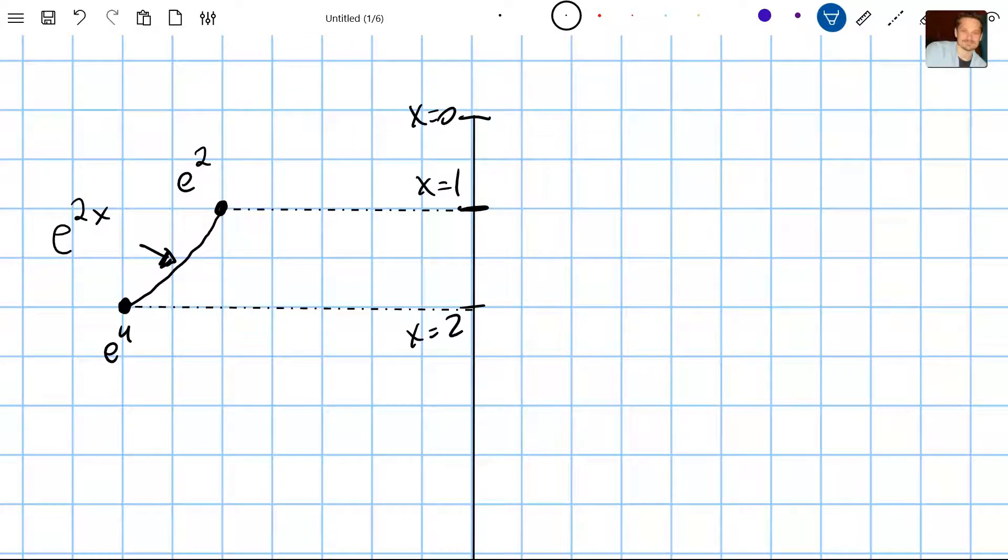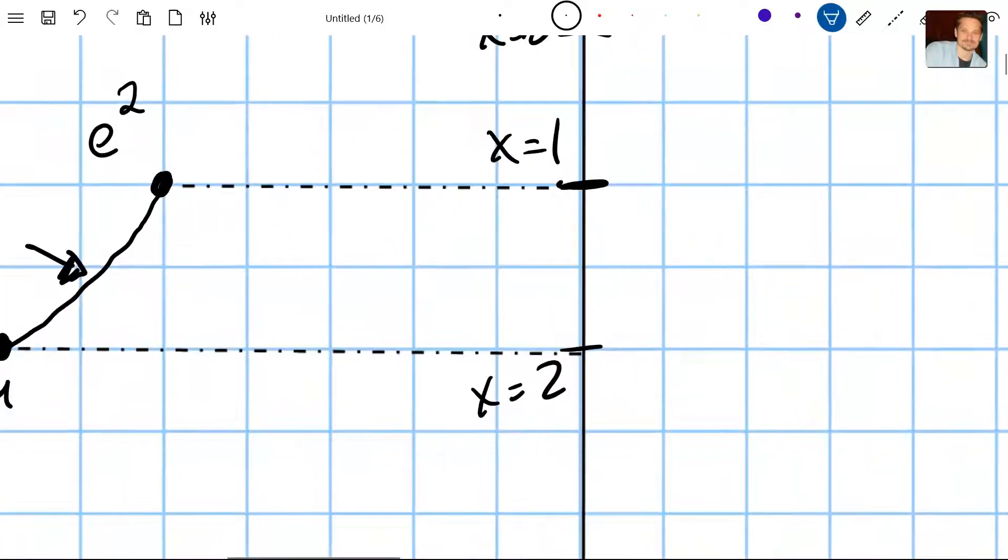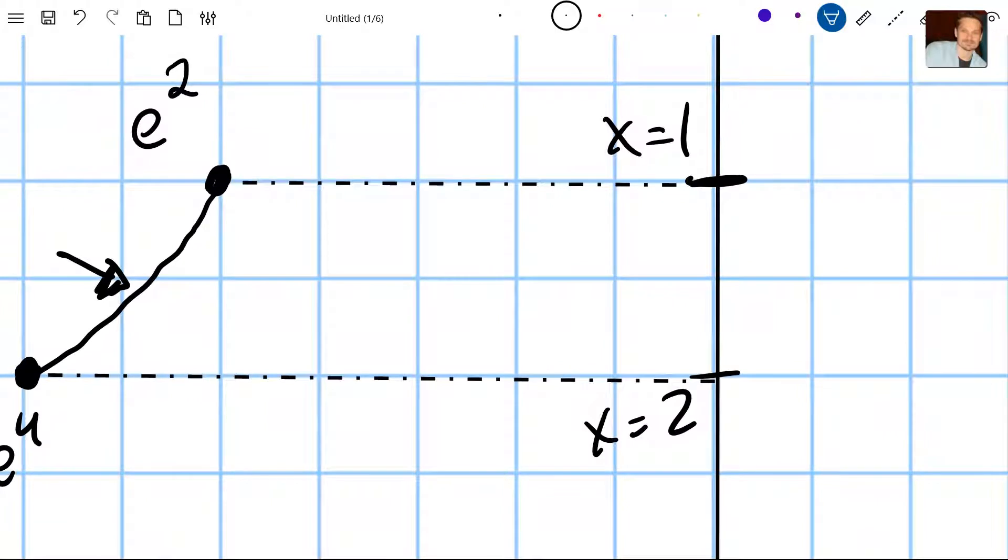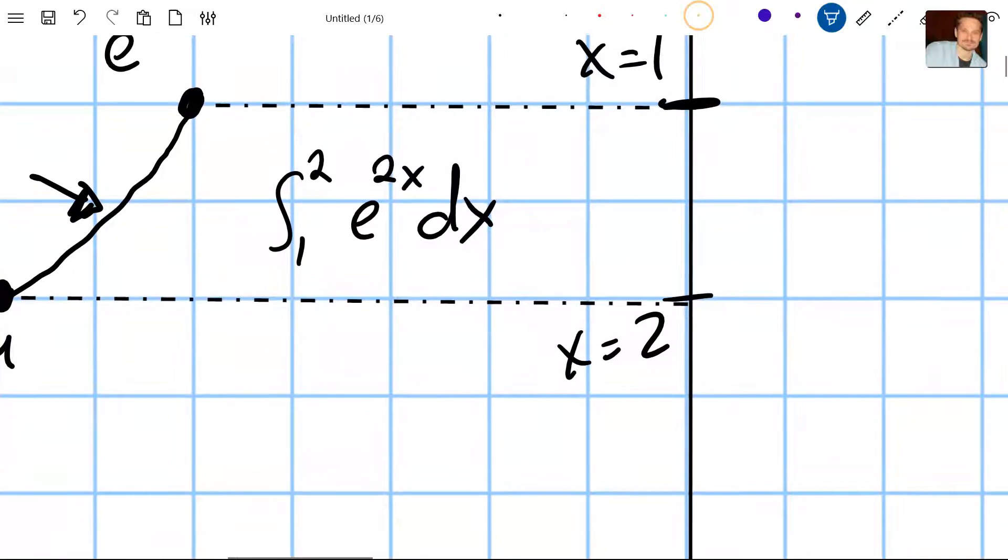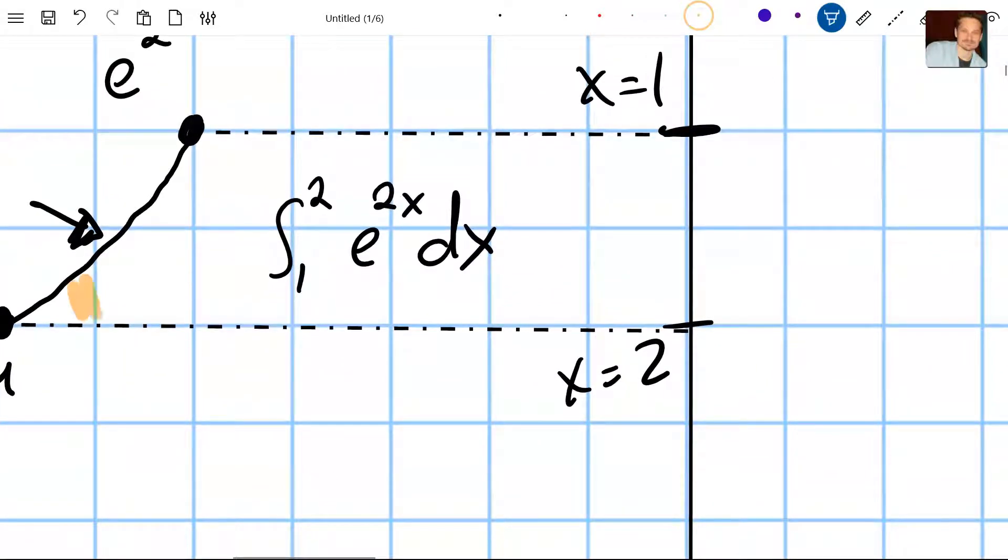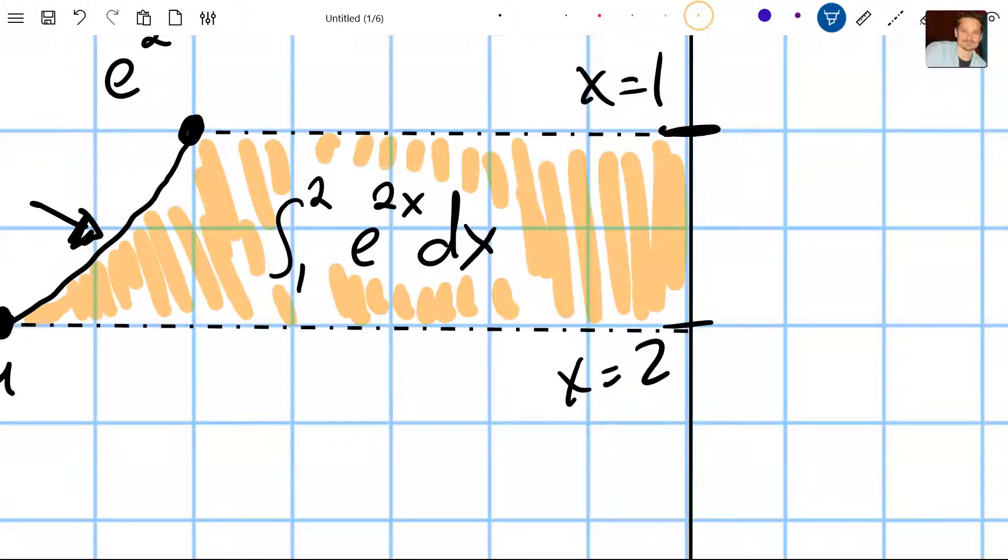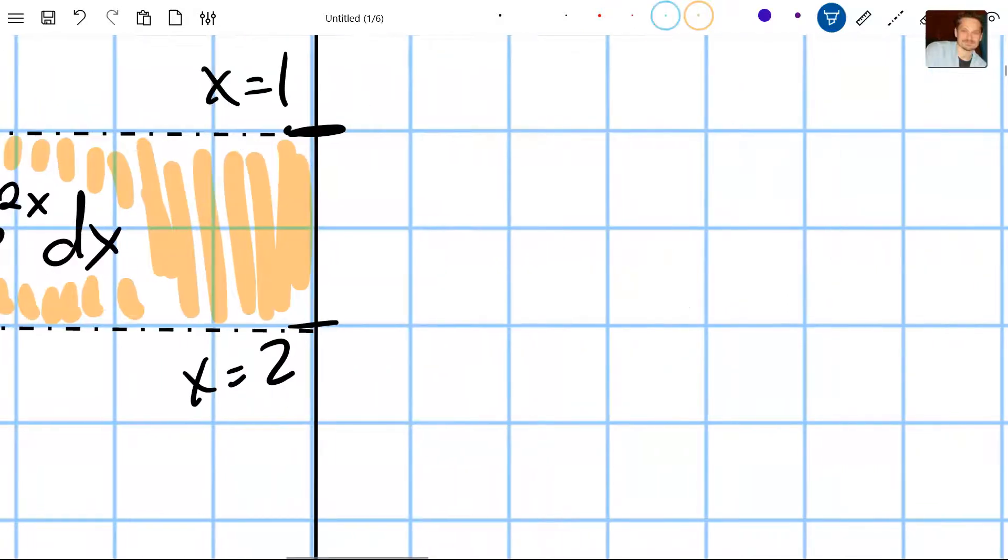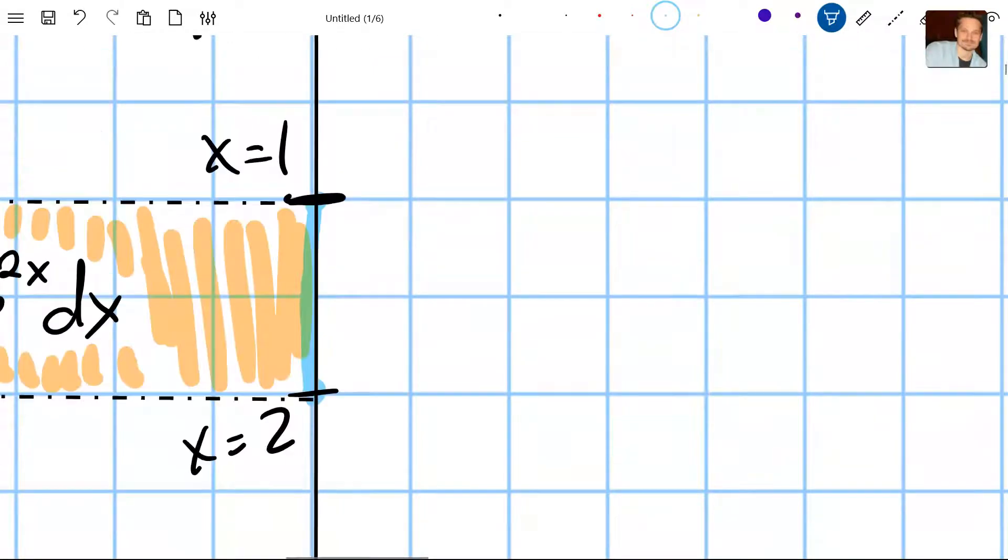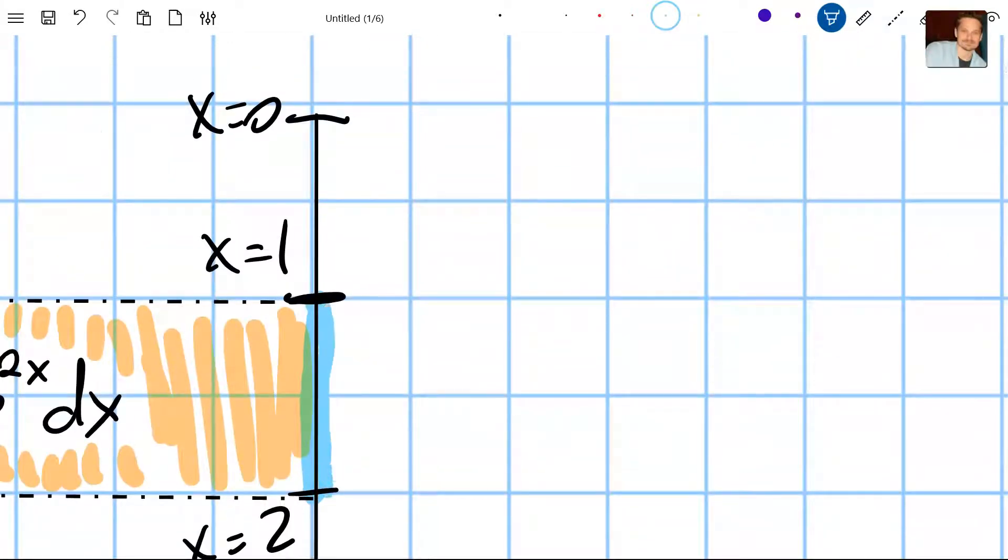And our integral would be finding the area here. So our integral would be finding this area. It would be the integral from 1 to 2 of e to the 2x dx. It would be representing or finding that area. Let me trace over it so we can make sure that we've got the right things in place here. So it would be finding this area. The domain of integration is from x equals 1 to x equals 2. It begins here and it ends over here. I'm doing that in blue so we can emphasize that point, the domain of integration.